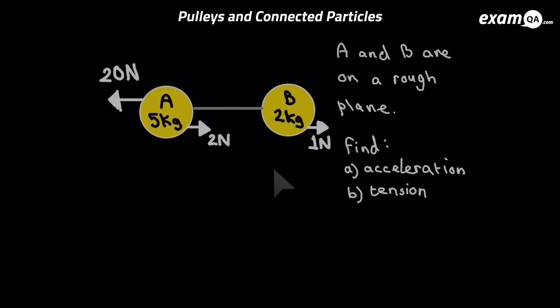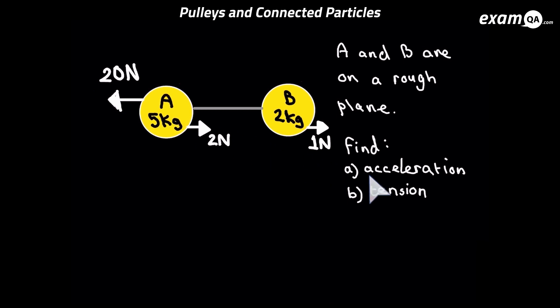In this video, we're going to be looking at connected particles. Let's look at this example here. We've got two particles connected, A and B, and they're on a rough plane. You can see there's a 20 Newton force which is probably going to make it move to the left. The question wants us to work out acceleration and tension.